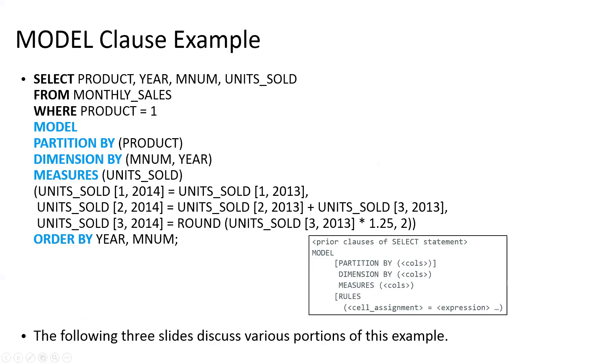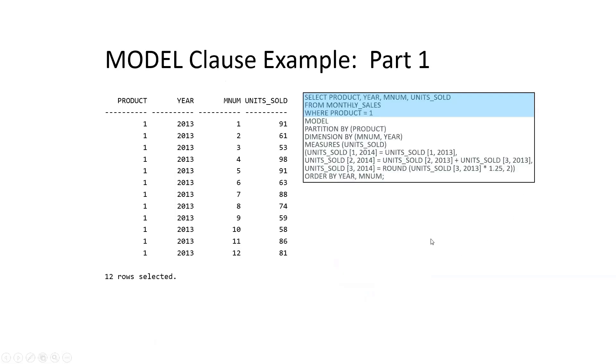So this is the example that we're going to be walking through where we have the normal start of our SQL statement, selecting some attributes from a table. This is where we are defining our model. And then this is where we are defining the rules or our prediction algorithm. We're going to walk through each one of these sections, step by step.